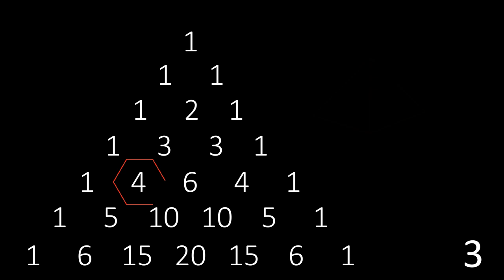Pick a number not on the boundary of Pascal's Triangle and look at the hexagon of numbers surrounding it. There are two groups of alternate numbers in this hexagon. If you multiply the three numbers in each group, you will find their products are the same.